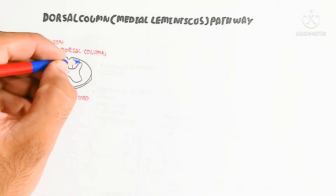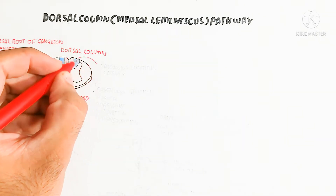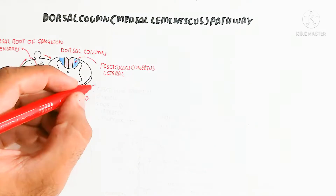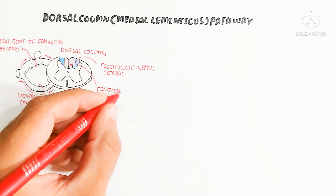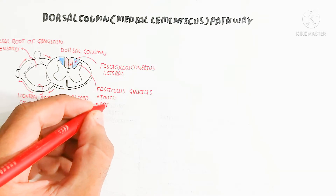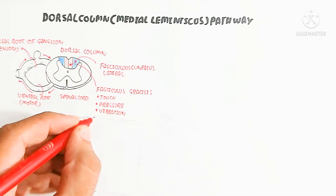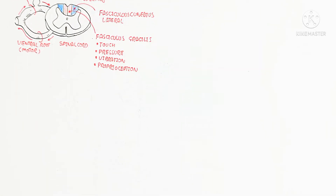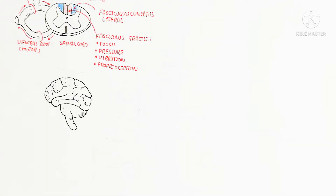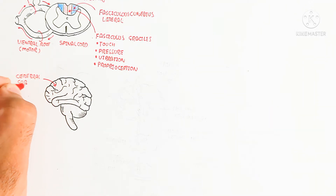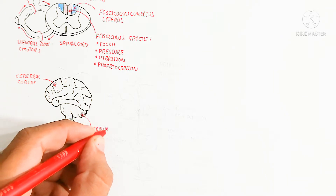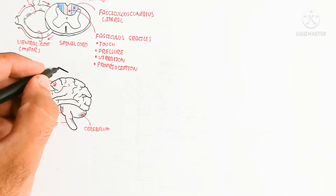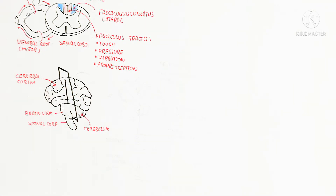The dorsal column contains the fasciculus cuneatus (shown in blue) and the fasciculus gracilis (shown in red), which carry touch, pressure, vibration, and proprioception. The dorsal column is a fast pathway — faster than the lateral and ventral pathways. In the brain cross section, we see the cerebral cortex with two hemispheres, the brainstem, spinal cord, and cerebellum, which is used for balance and motor control.